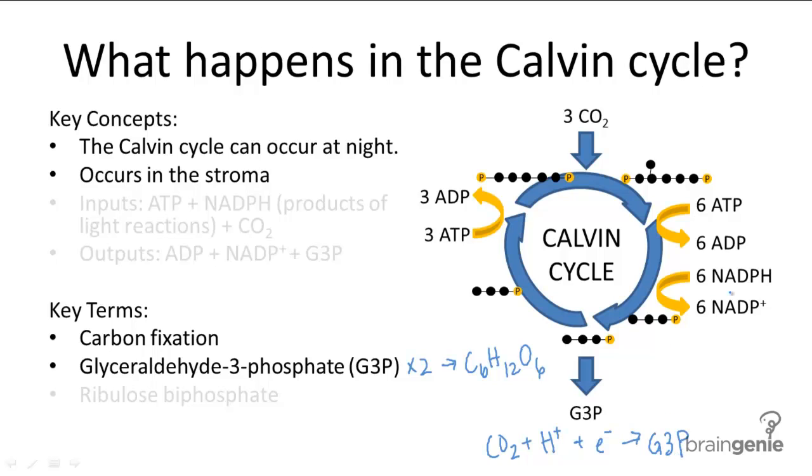And the protons are carried over by NADPH. The protons and the electrons are both from the divided water molecules of the light reactions. A lot of ATP is also required to run this reaction. So both ATP and NADPH, as we said, are products of the light reactions, and in that way, the Calvin cycle depends on the light reactions.